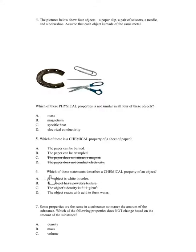Number 6. Which of these statements describes the chemical property of an object? A. The object is white in color. B. The object has a powdery texture. C. The object's density is 2.11 grams per cubic centimeter. D. The object reacts with acid to form water.